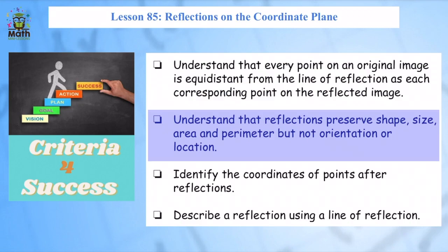Then we're going to understand that reflections preserve shape, size, and area. In other words, those things will not change. The shape will stay the same, the size, the area, and the perimeter. The only thing that's going to look different is it's going to be in a different location on our graph.